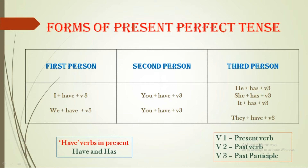Forms of present perfect tense — sentence structure. First person singular: I; plural: we. Second person: you. We use 'have' for I, we, you, and they. But for he, she, it — we use 'has'.